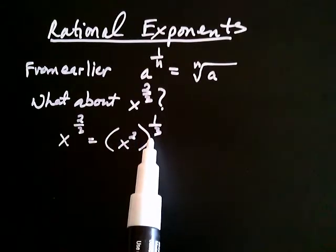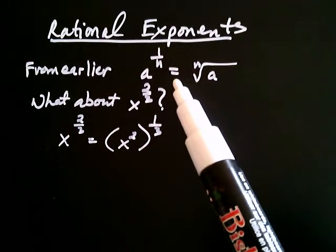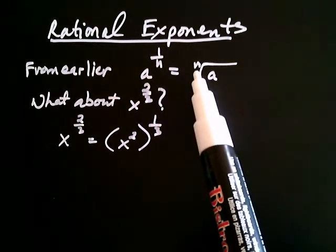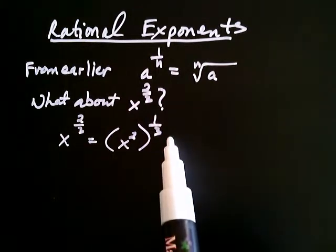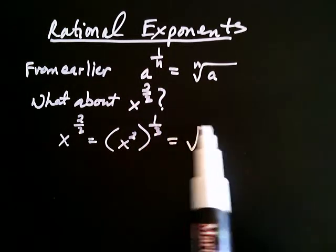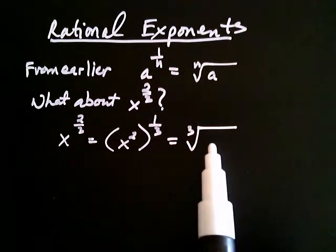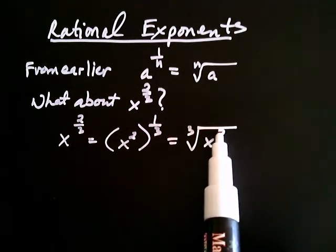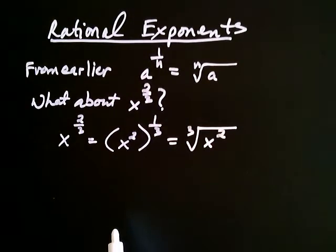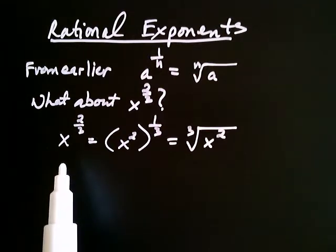Any time I take something and raise it to the 1 third, I can use this property, because it's like having 1 third — the 3 will become the index. So taking x squared to the 1 third is the same thing as taking the third root of x squared. This is a fine way of thinking about x to the 2 thirds.